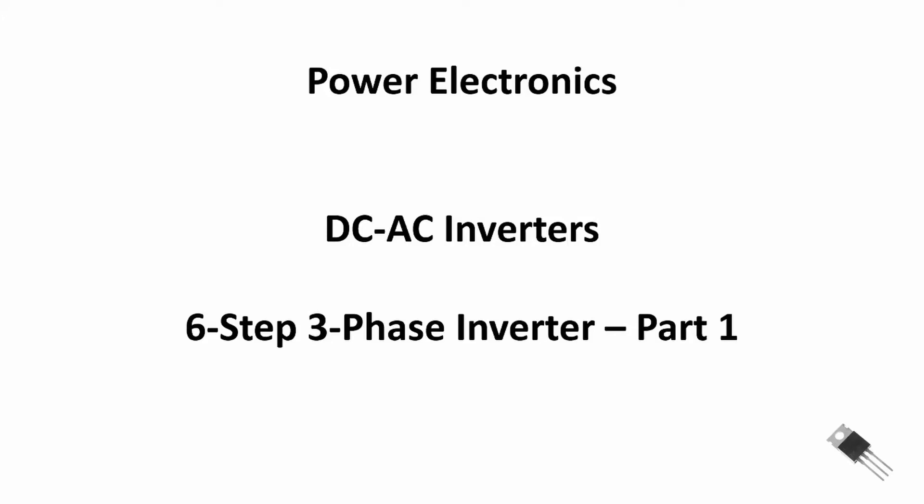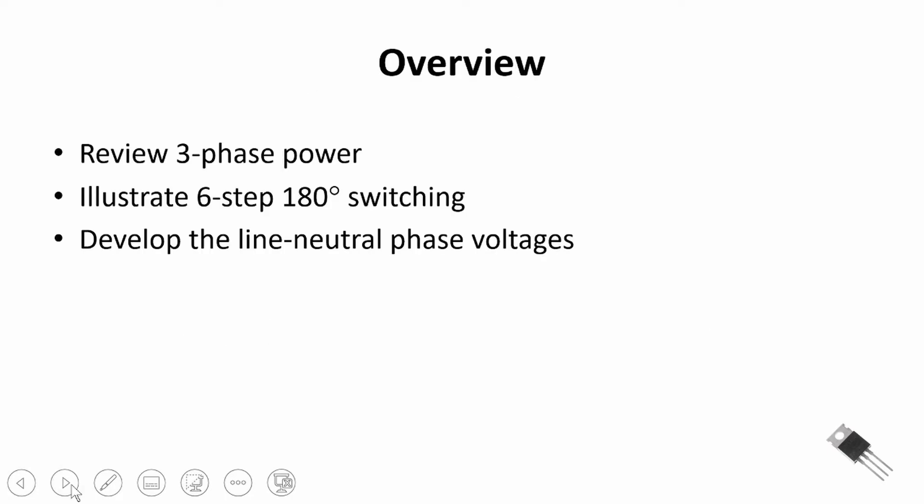Welcome back to Power Electronics. We're continuing with our section on DC to AC inverters, and this is the first of a two-part set of videos on the six-step three-phase inverter. In this video we're going to review three-phase power and then illustrate six-step 180-degree conduction switching. There are other types such as 120-degree and 150-degree conduction, but we're going to focus on 180-degree switching and develop the line-to-neutral phase voltage for our six-step inverter.